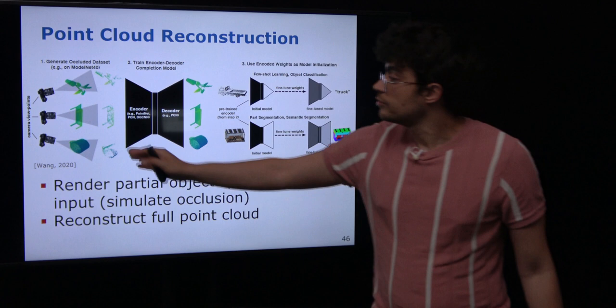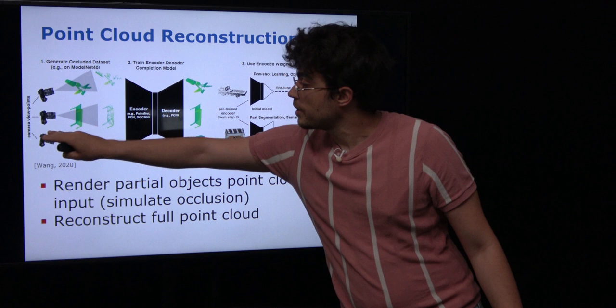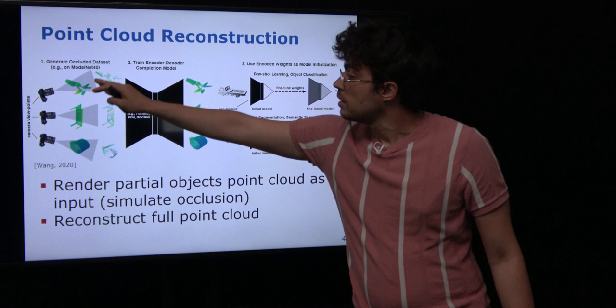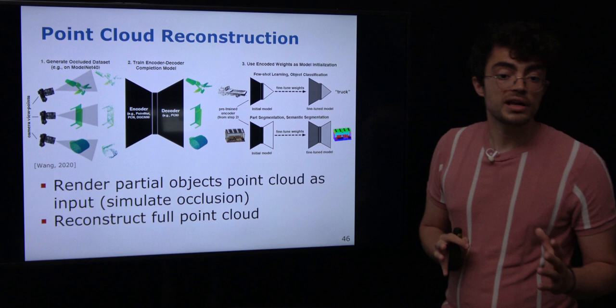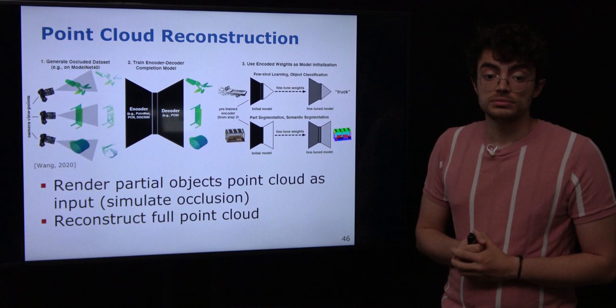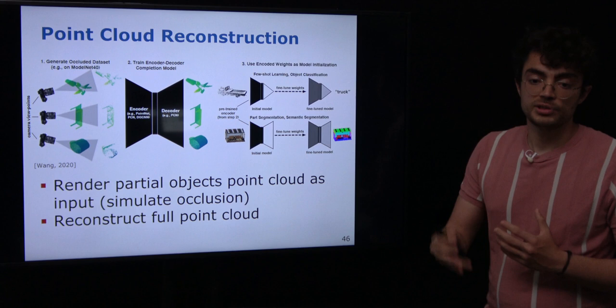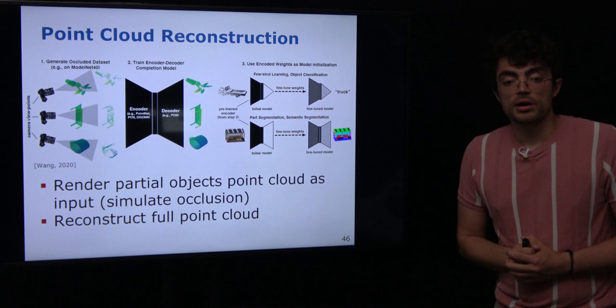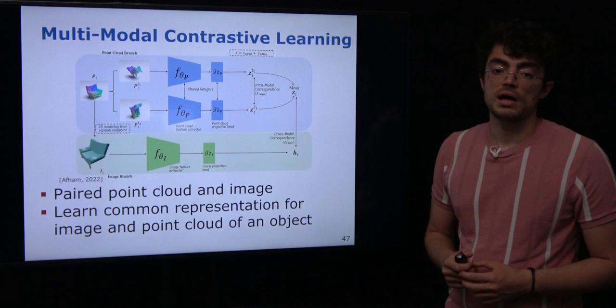For point cloud reconstruction, given a full 3D object representation we sample random viewpoints and render only the partial point cloud visible from that random view. This partial point cloud is the input — we pass it through the network and the network predicts the full, dense object point cloud. We already have the ground truth, which is the original full point cloud. After pre-training with this point cloud reconstruction task, we can fine-tune to our target downstream task.